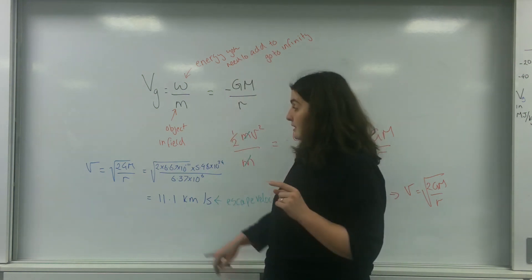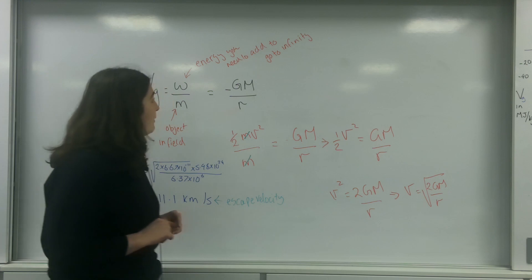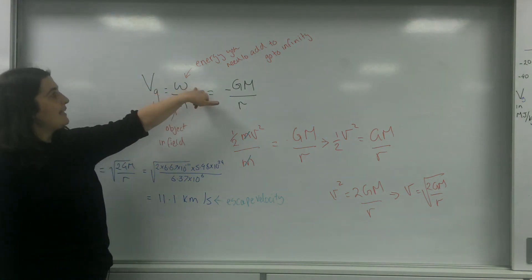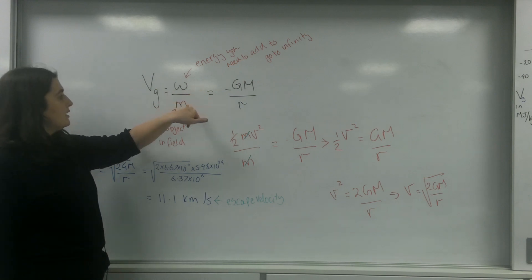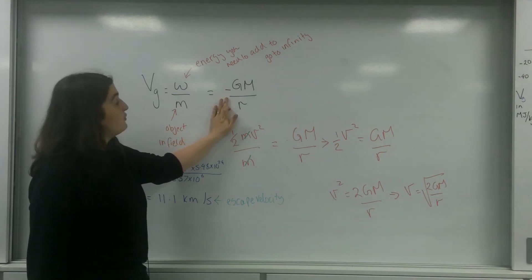But for now, what you need to know is this is the formula for escape velocity. And how I was able to do that was using this potential concept of potential is the energy that you need to add to go to infinity divided by the mass of the object. And I've made that equal to the actual generic potential formula for the gravitational field.